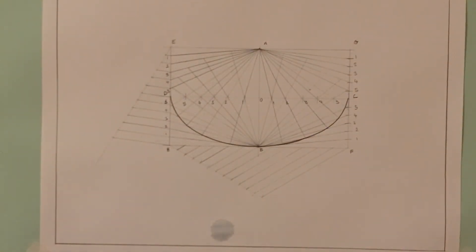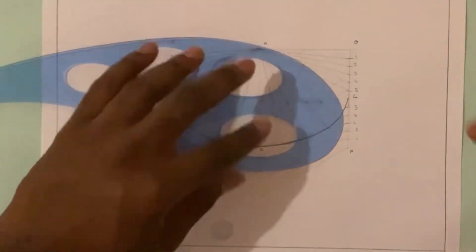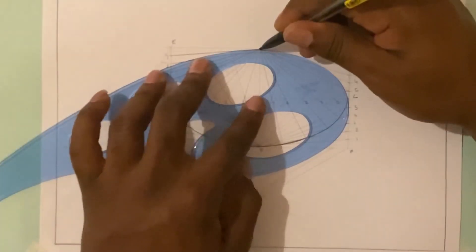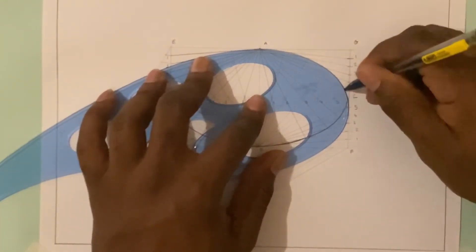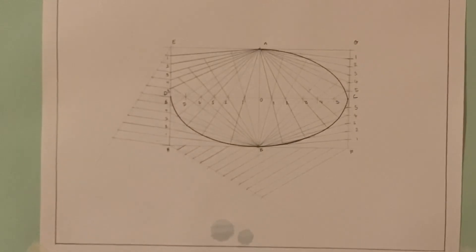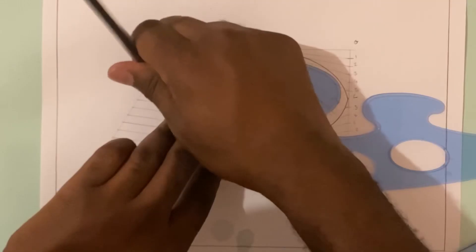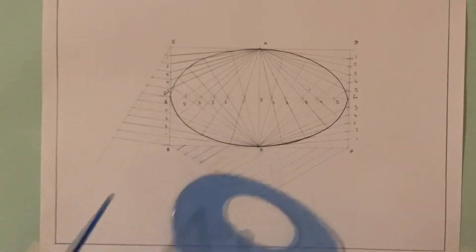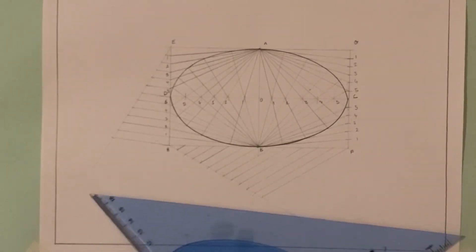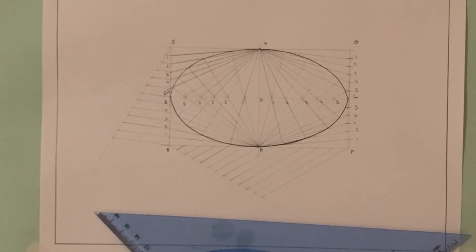All right guys, so that ends it for our ellipse using the rectangular method.